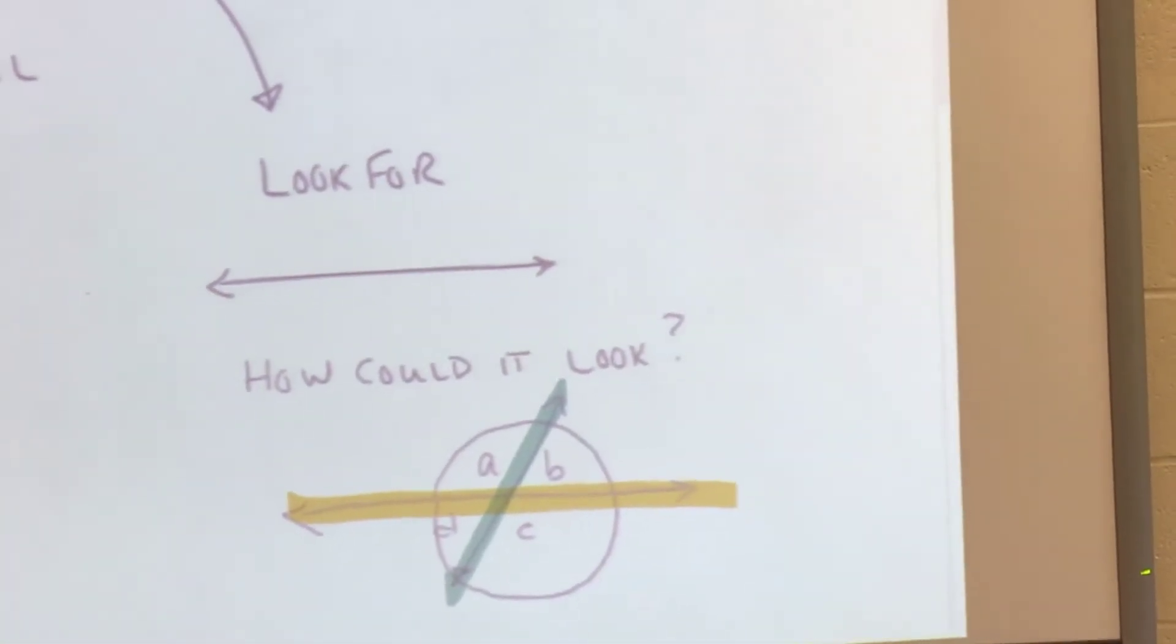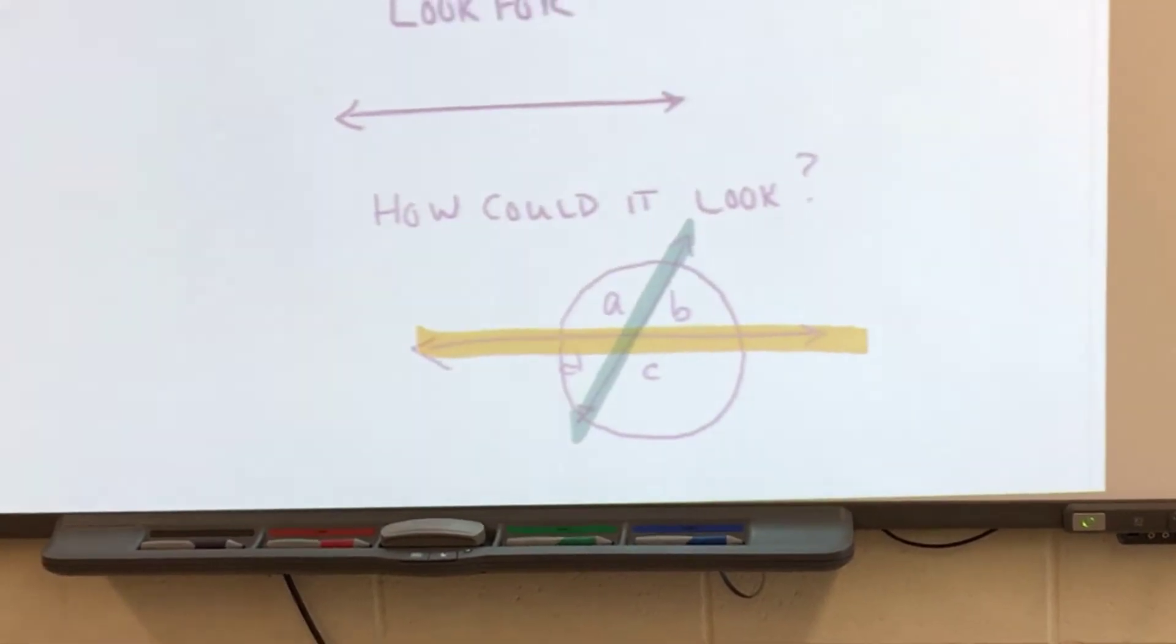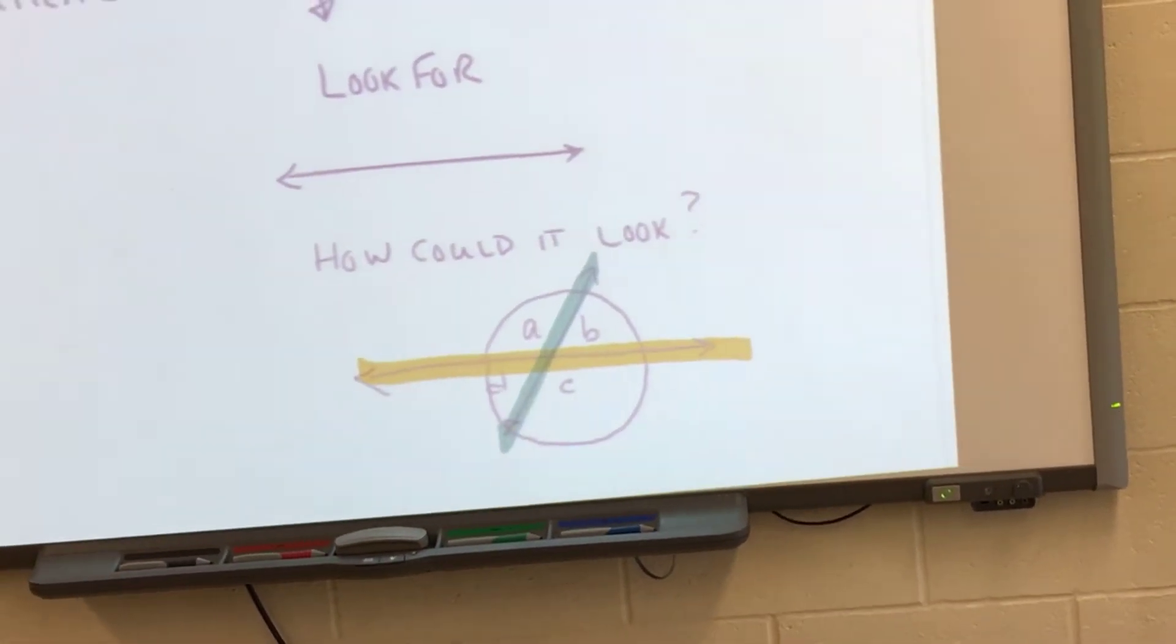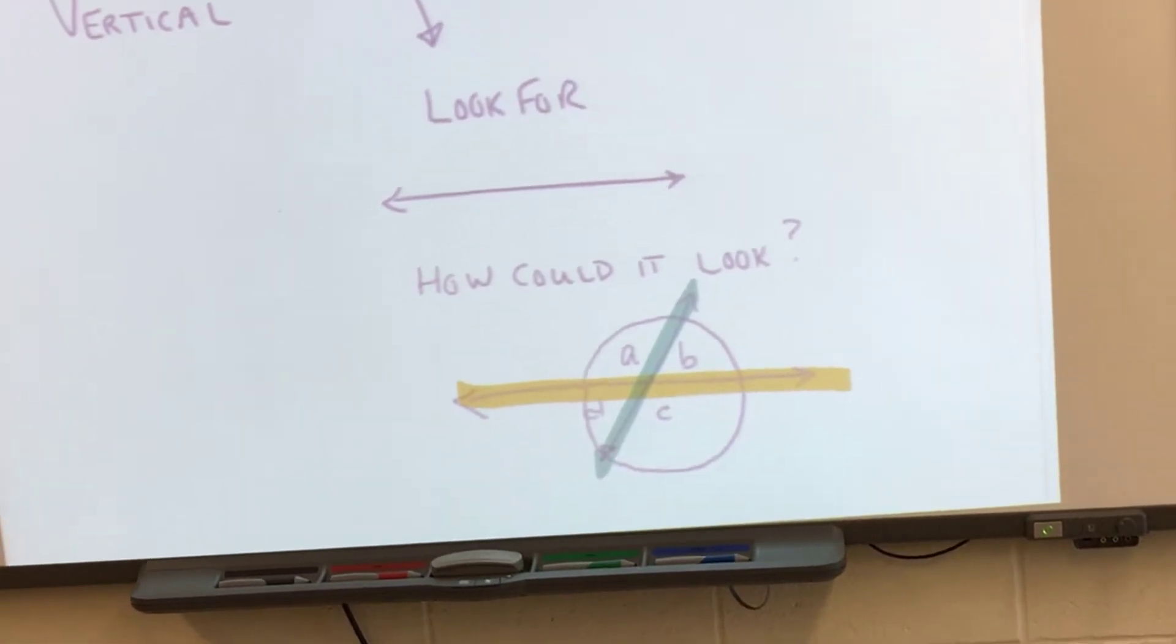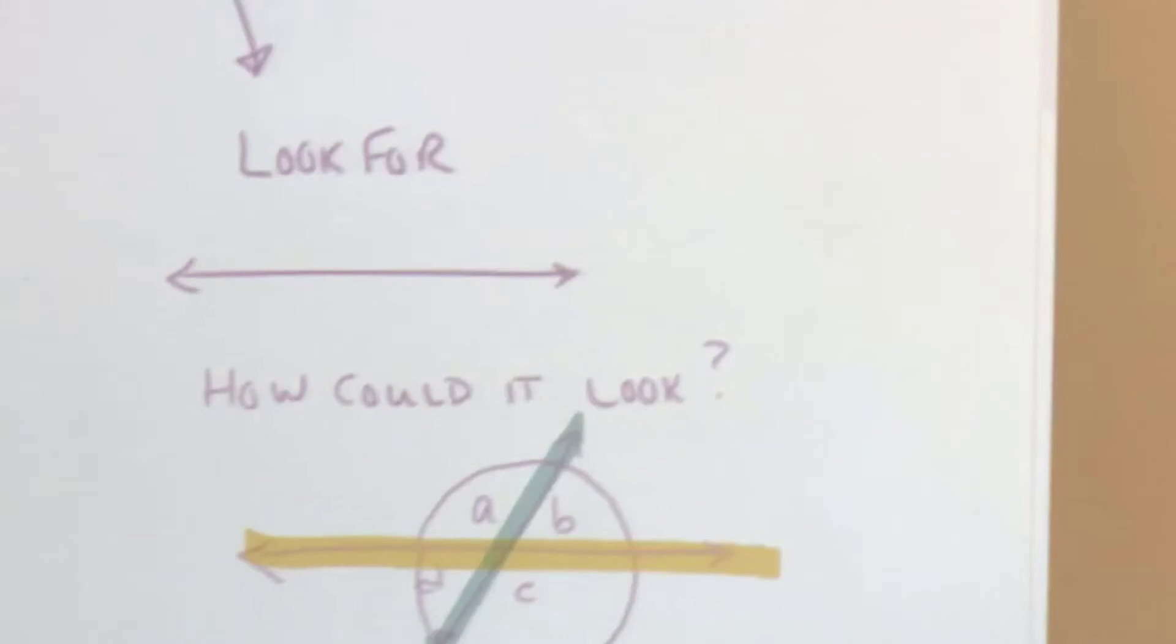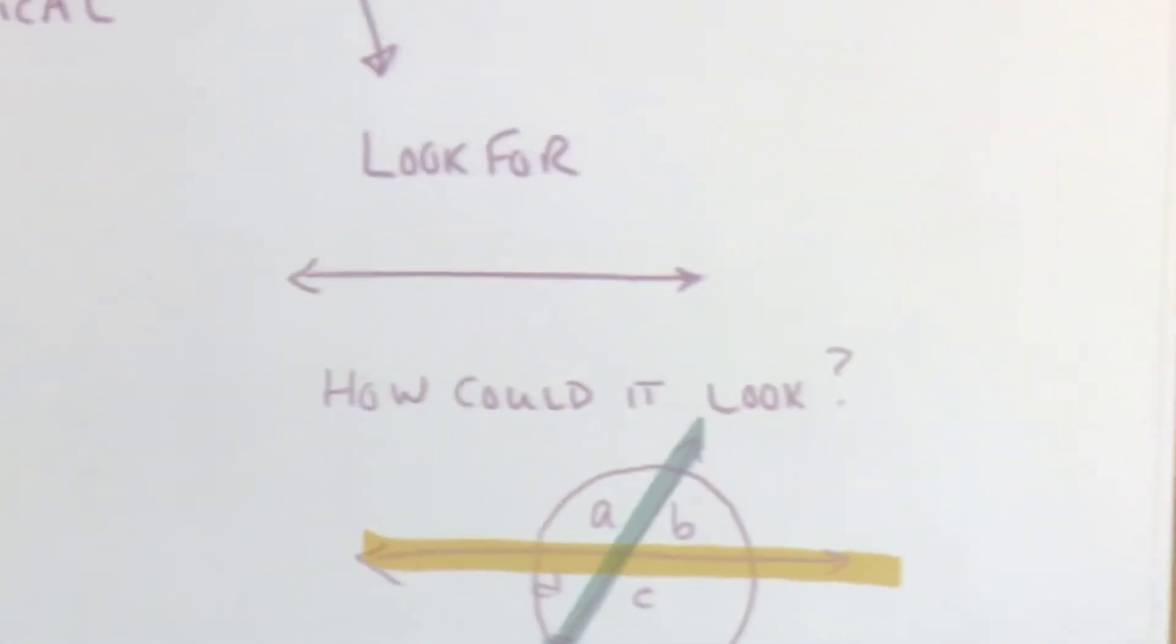They're the first four letters of the alphabet. Yes. I could use any letters though. What do you notice about where they're positioned? What do you notice about how A is positioned with C and B is positioned with D? Where's A compared to where C is? Opposite. It's opposite. It's across from it, right?